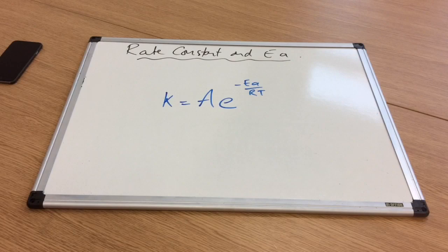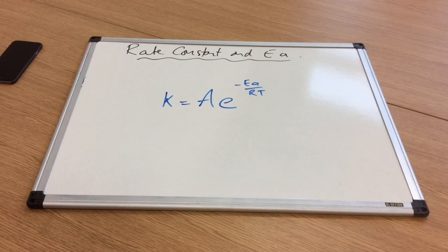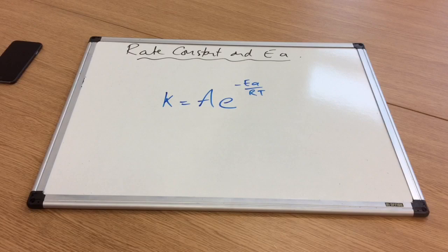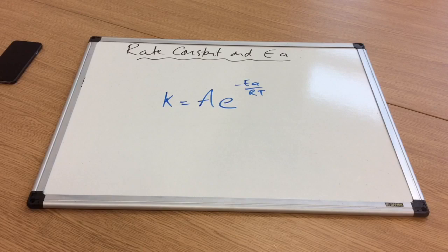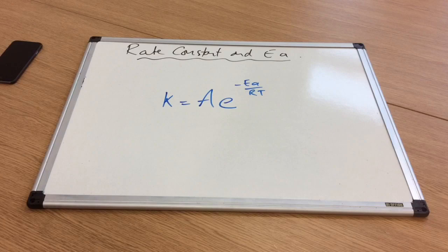Just as I did at the start, we're going to think about it in basic terms and then use the equation to prove what we're saying. If you have a high activation energy, that's going to inhibit a lot of the molecules from colliding successfully, giving you a slow rate of reaction and therefore a correspondingly low rate constant.